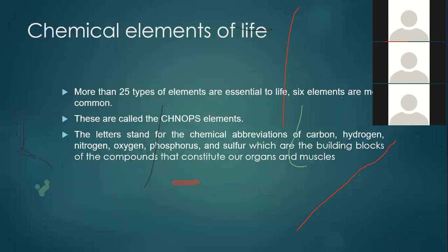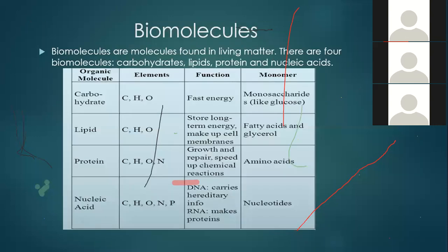That takes us to chemical elements of life. More than 25 types of elements are essential to life, out of which six are the most important and common. These six are known as C-H-N-O-P-S: carbon, hydrogen, nitrogen, oxygen, phosphorus, and sulfur. All these are the building blocks that constitute our organs and muscles. Returning to biomolecules — molecules found in living matter — there are four: carbohydrates, lipids, proteins, and nucleic acids.